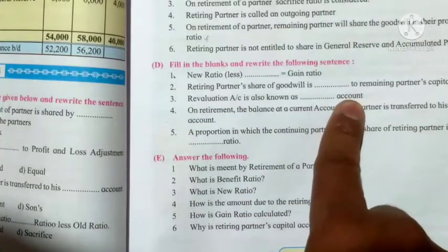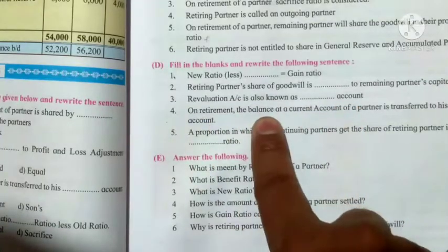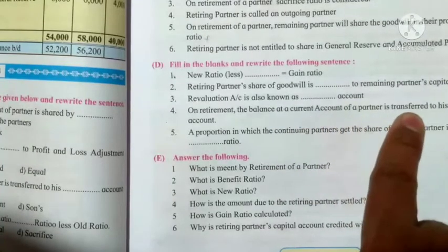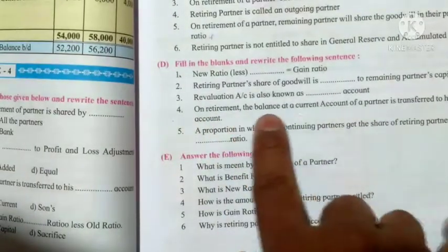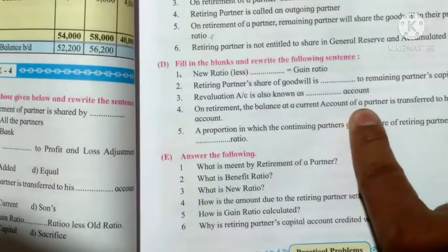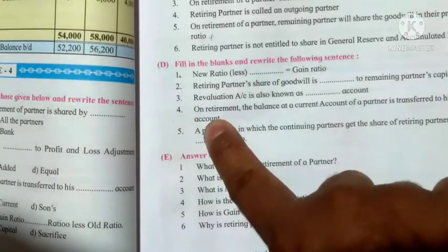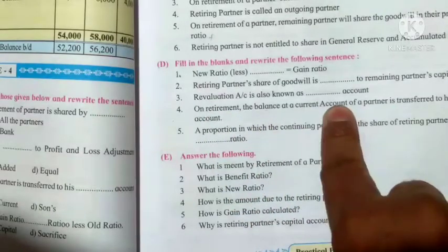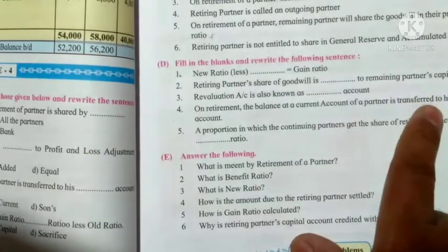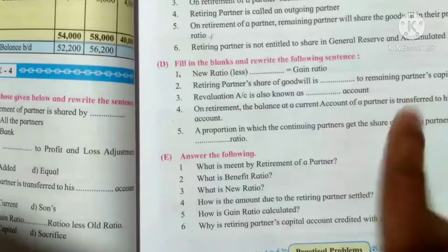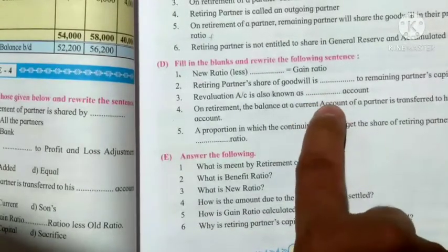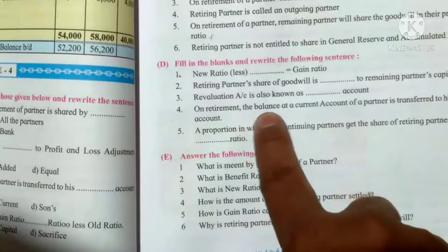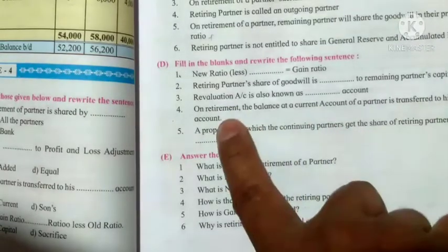Number 3: revaluation account is also known as profit and loss adjustment account. Number 4: on retirement, the balance of the current account of a partner is transferred to his capital account.